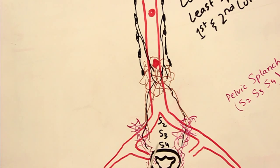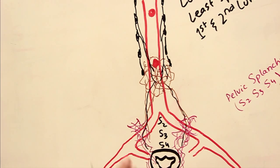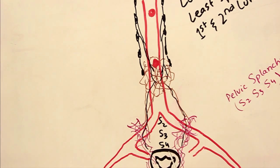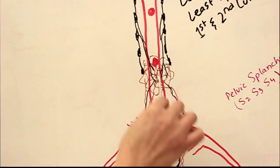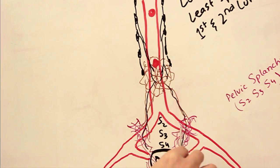The nerves emerging from the lateral horns of S2, S3, and S4 give off preganglionic parasympathetic fibers that travel as the pelvic splanchnic nerves, with root values S2, S3, and S4. These pelvic splanchnic nerves are also known as nervi erigenti. They join together with the postganglionic sympathetic fibers, and the parasympathetic fibers blend in as well.